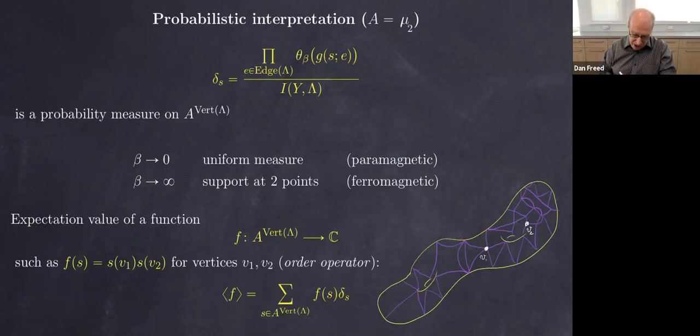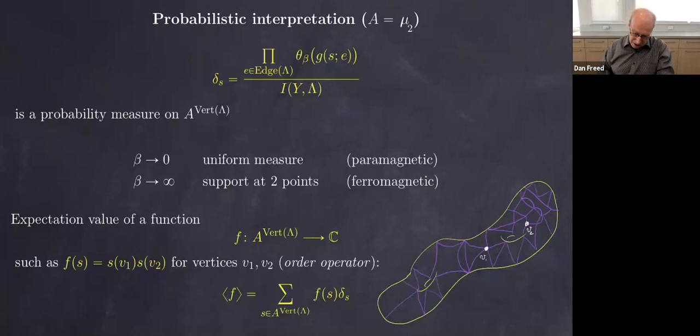A typical thing one computes in physics is the expectation value of some function against this measure — for example, pick two vertices, look at the spins, take the product (plus or minus one), and average against the measure. That's a correlation function telling you how correlated those two sites are — what's called an order operator. There's also a disorder operator that will come in.